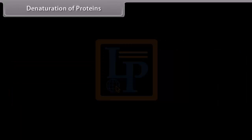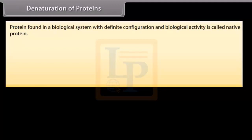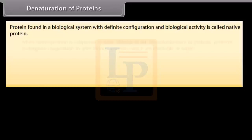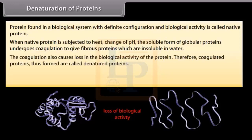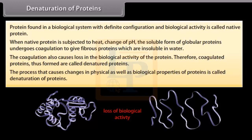Protein found in a biological system with a definite configuration and biological activity is called a native protein. When a native protein is subjected to heat or change of pH, the soluble form of globular proteins undergoes coagulation to give fibrous proteins which are insoluble in water. This coagulation also causes loss in the biological activity of the protein; the coagulated proteins formed are called denatured proteins. The process that causes changes in physical as well as biological properties of proteins is called denaturation — for example, coagulation of egg on boiling and curdling of milk.